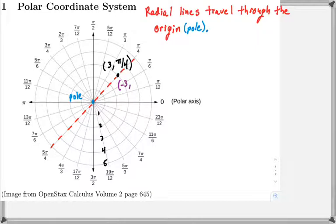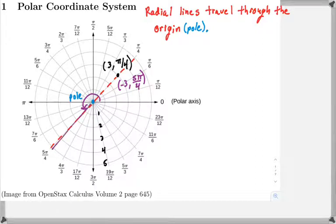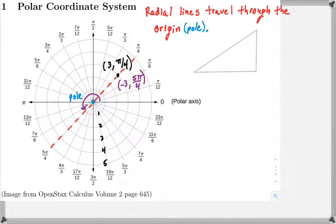The point (3, π/4) can also be represented as (-3, 5π/4). The r value, which we call the directed distance, when negative means you go in the opposite direction. So we go to 5π/4, and instead of going out toward 5π/4 a distance of 3 units, we go 3 units in the opposite direction. So (3, π/4) and (-3, 5π/4) are two different ways of representing the same point.